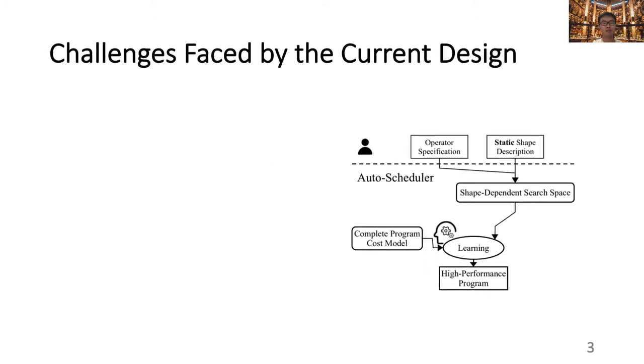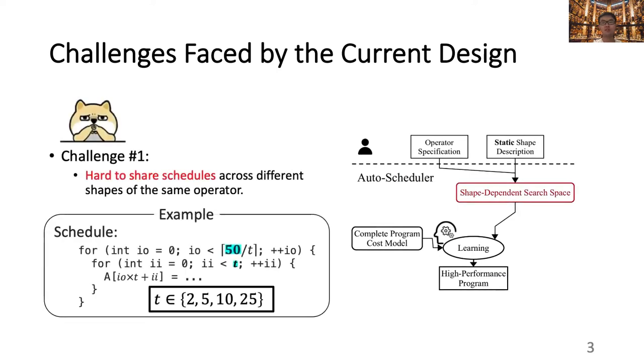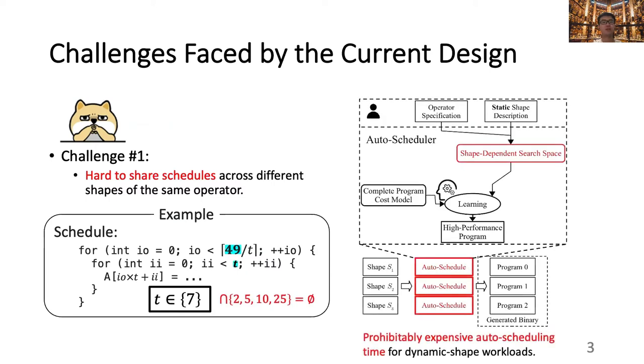However, we do notice that there are several challenges faced with the current auto-scheduler design, with the first one being that it is hard to share schedules across different shapes of the same operator. Consider the loop tiling examples that we had previously. Imagine that the outer loop extent has been changed from 50 to 49. With this simple change, the tiling candidates have been reduced to a single element set 7, which does not have any intersection with all the factors of 50. The fact that it is hard to share schedules under the shape-dependent search space construction further implies that it is extremely challenging to auto-schedule dynamic shape workloads. In order to auto-schedule for such a workload, we need to search for each shape instance of the workload, which is clearly inefficient.